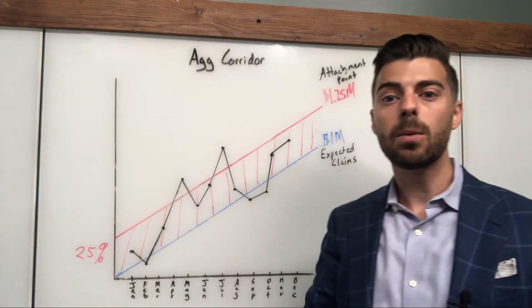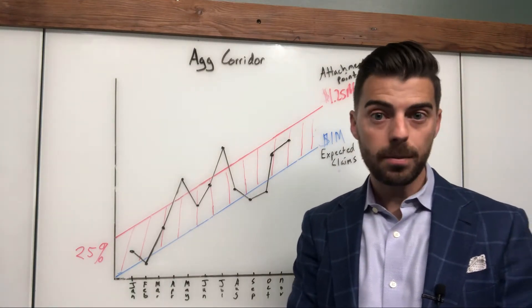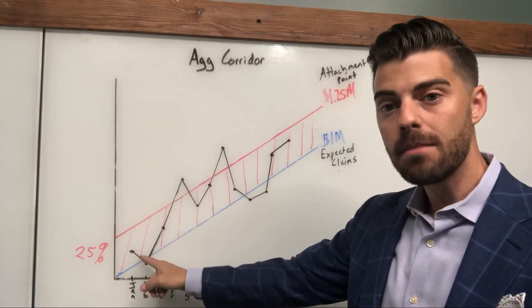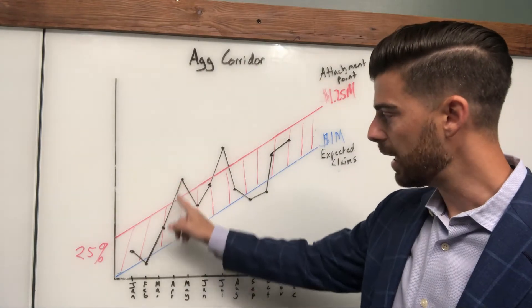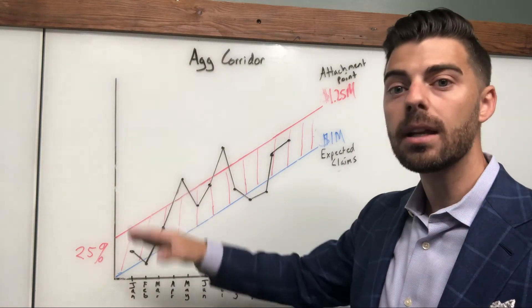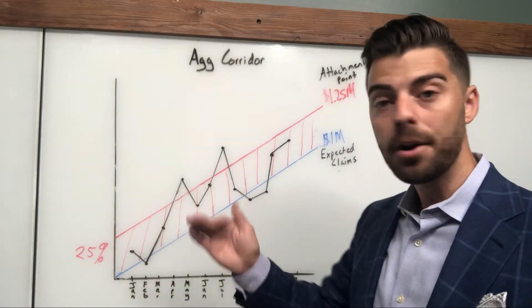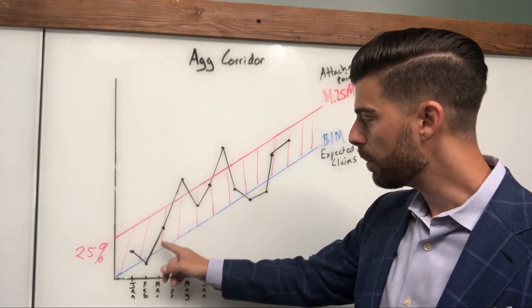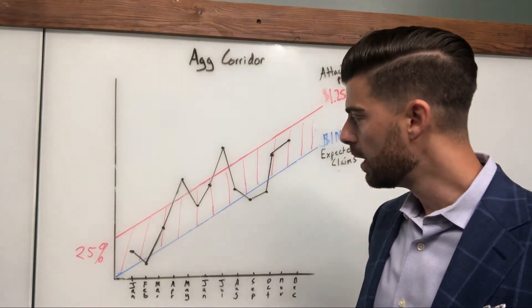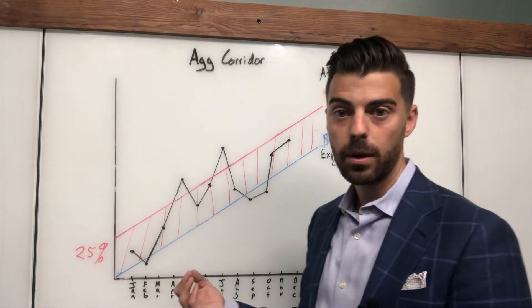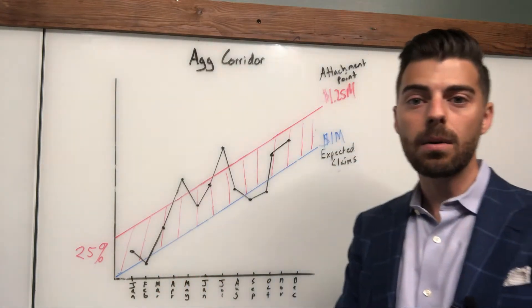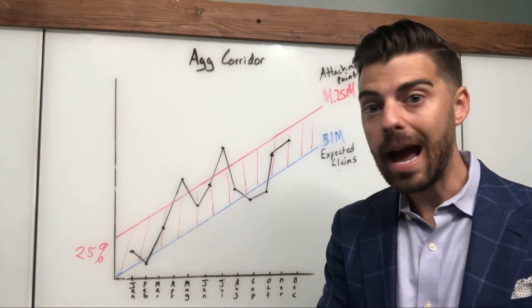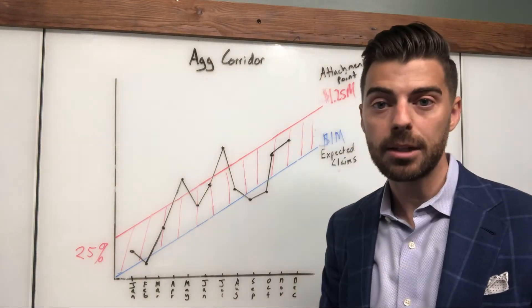So in that previous video, I talked about when aggregate reimbursement would come into play. In this graph, I have the monthly fluctuation of aggregate claims. Aggregate meaning all those claims that are pooling up for every member combined underneath the specific deductible. You can see at the start of the plan there, they're running pretty well. They popped up over in April. They exceeded that monthly attachment point. The reason why I say monthly is every underwriter, when they give you a stop loss quote, will give you a monthly aggregate factor, which is used to calculate the annual attachment point.